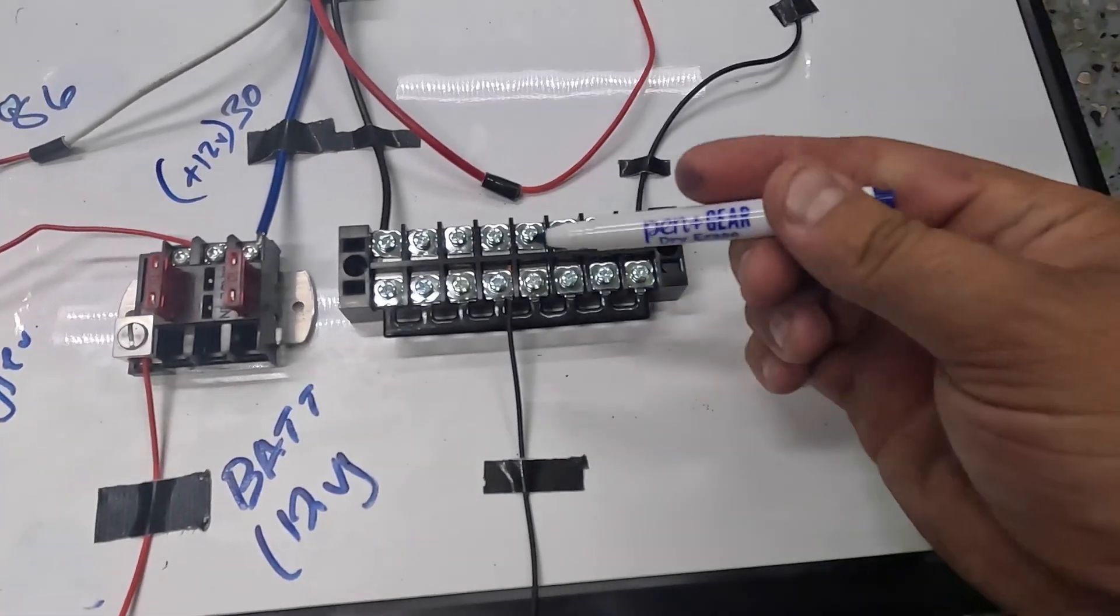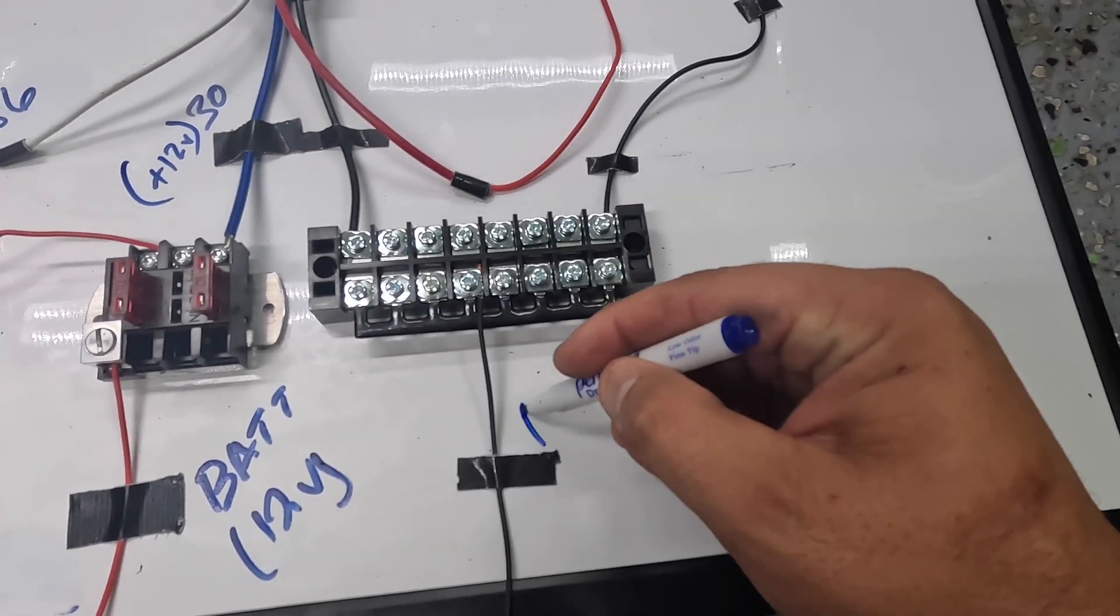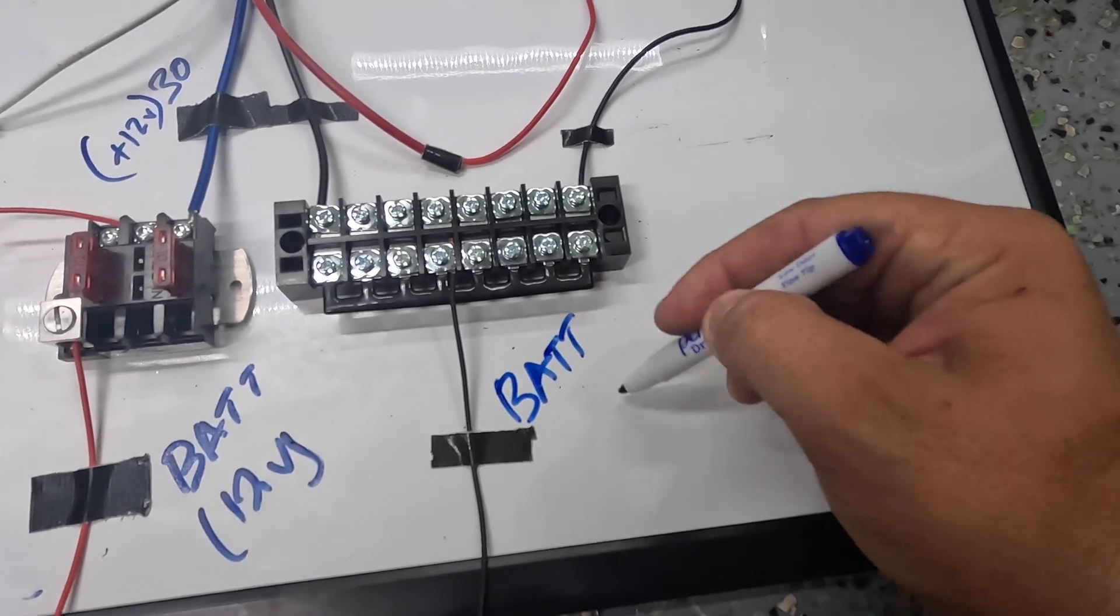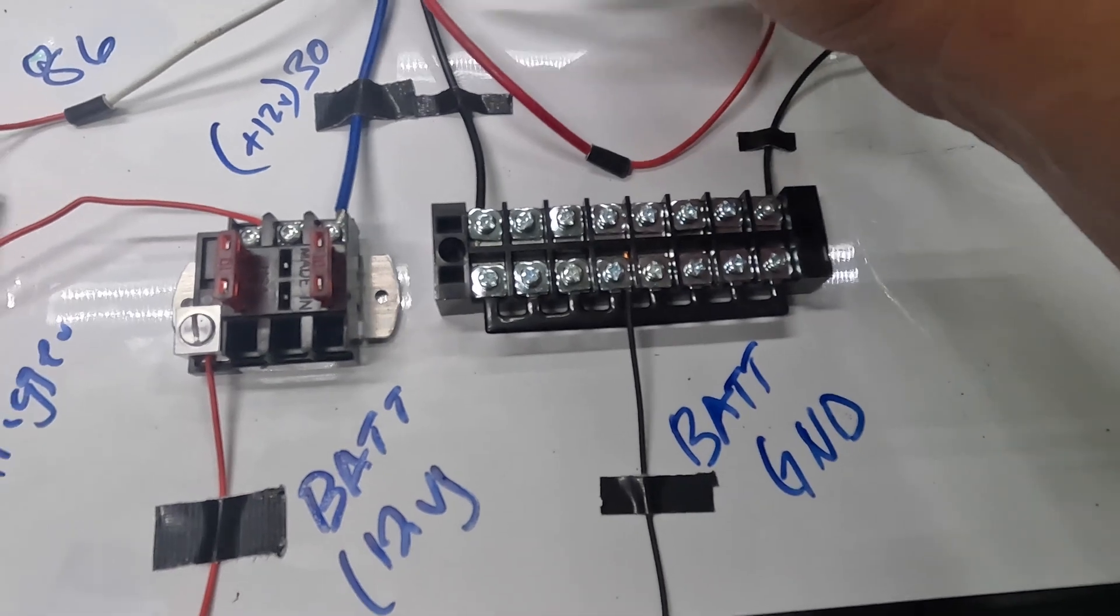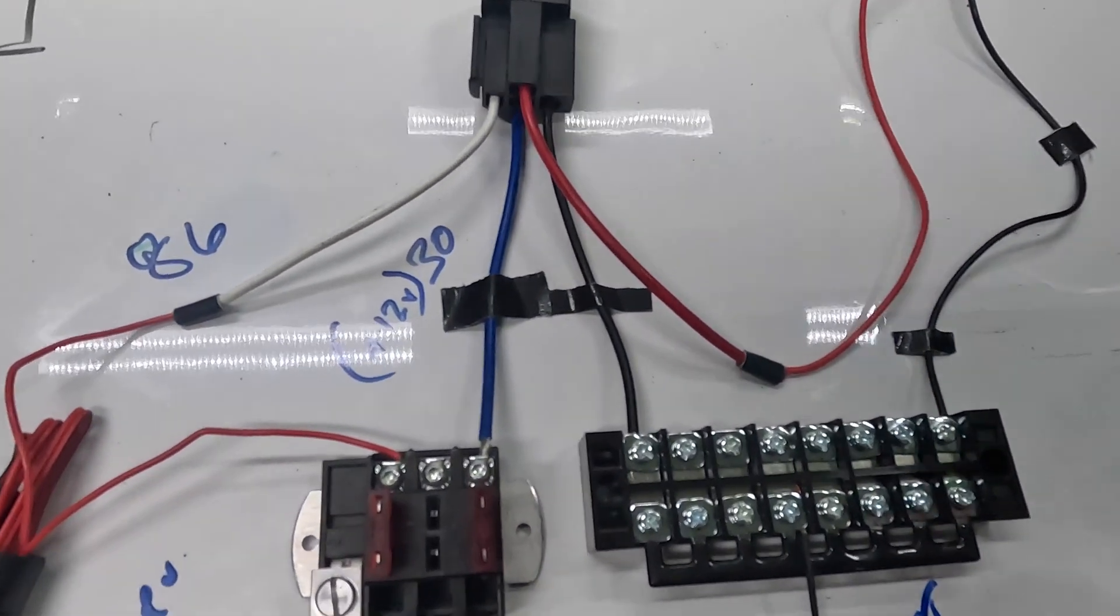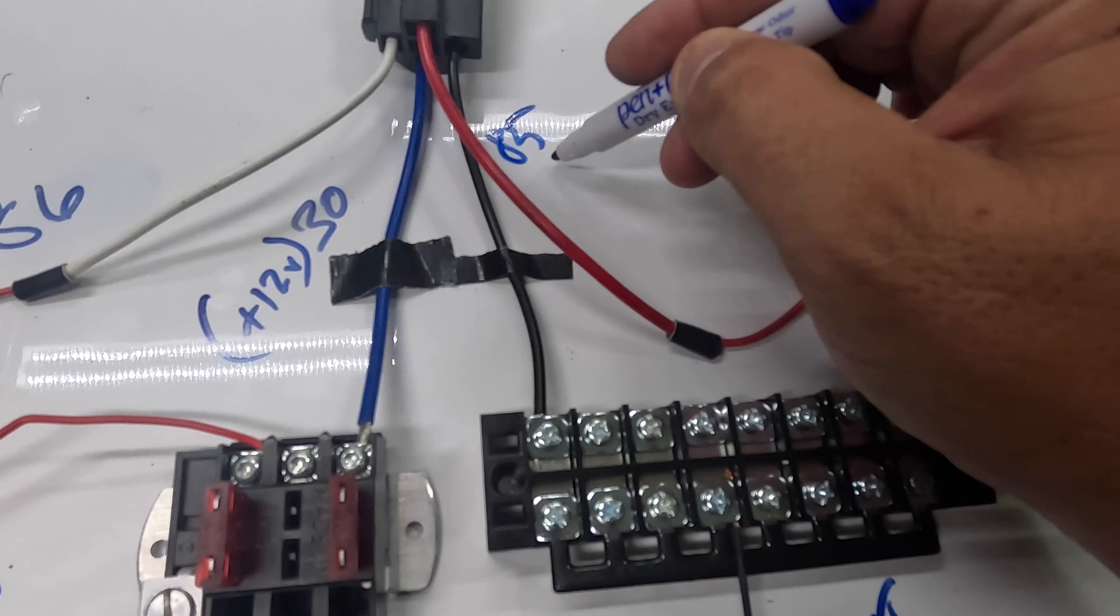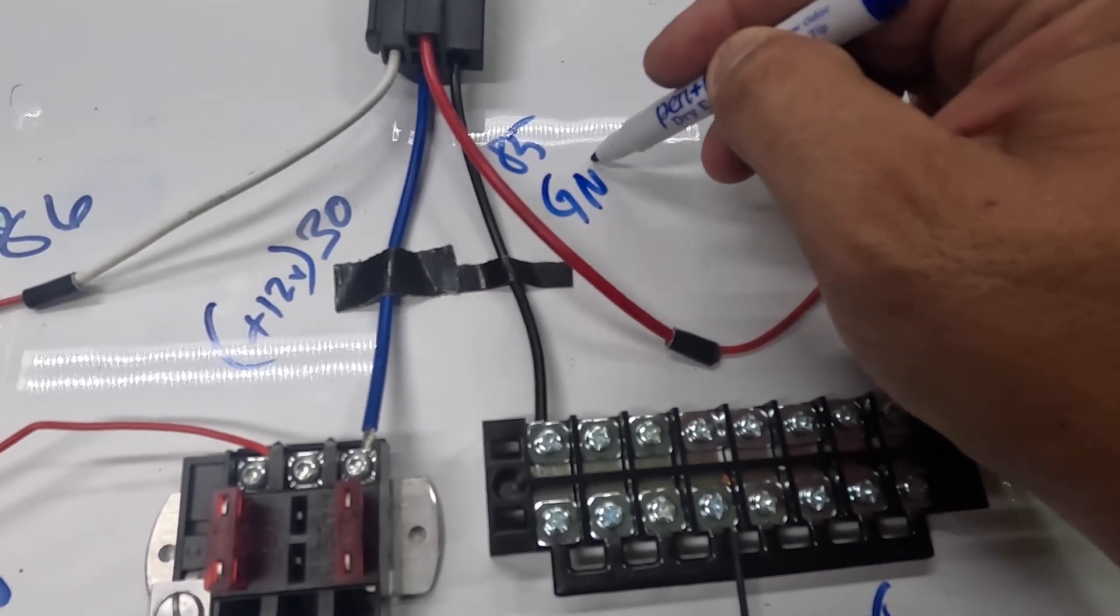So the next side is going to be your ground. So this is just going to be that ground. And then you can see this one, which is the black wire on the bottom. That is going to be pin 85, which again is ground.